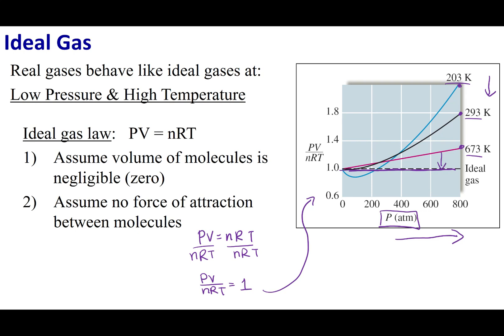What I can say is if I take real gases, they behave more like an ideal gas at low pressures and high temperatures. Now the question you might ask is why do they behave like ideal gases under these particular conditions?